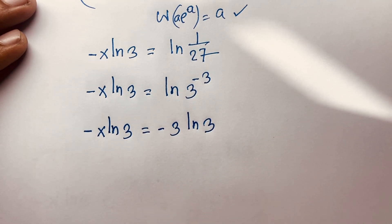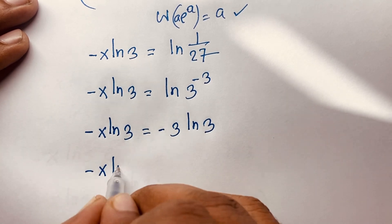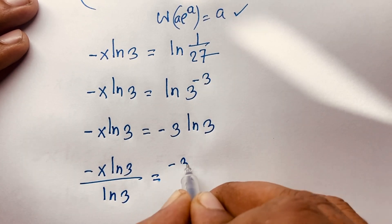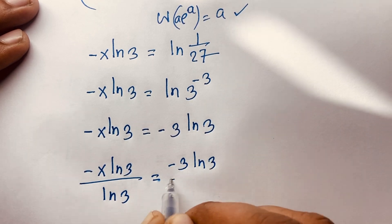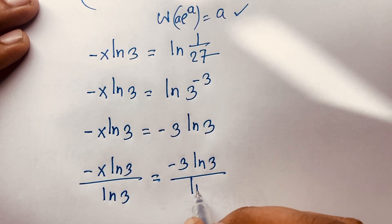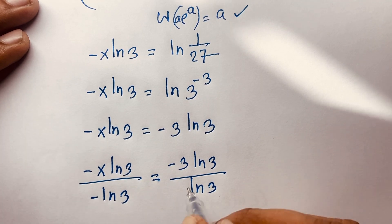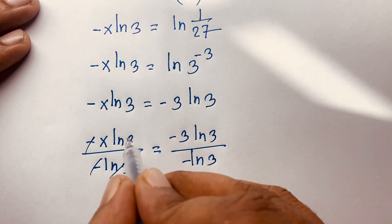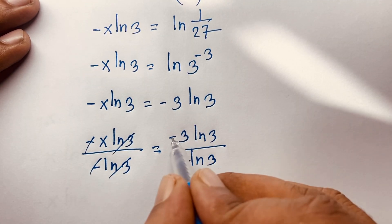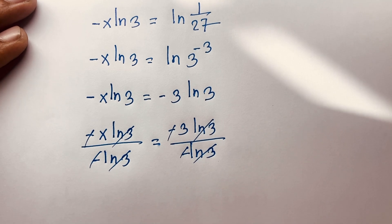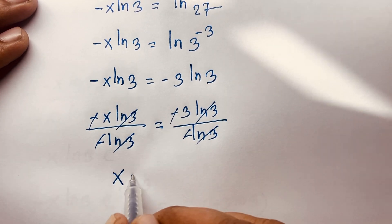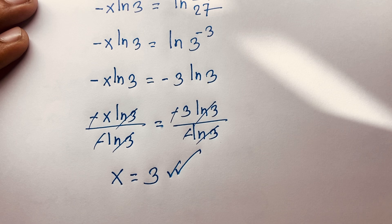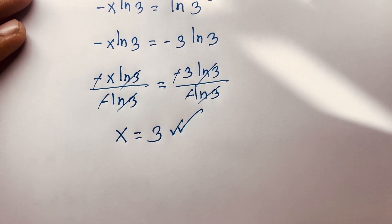So we have: negative x ln 3 is equal to negative 3 ln 3. Dividing both sides by negative ln 3, the ln 3 terms cancel on both sides, and we find x is equal to 3. This is our final answer for this math olympiad question.